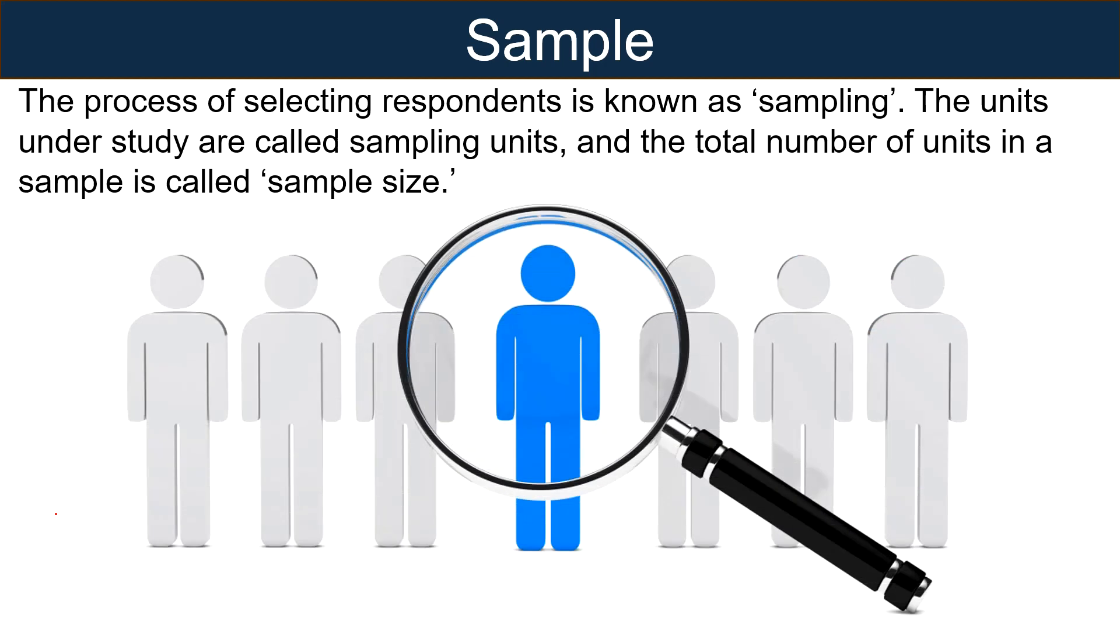The process of selecting respondents is called sampling. The units under study are called sampling units and the total number of units in a sample is called sample size. While conducting statistical testing, samples are mainly used when the sample size is too large to include all the members of the population under study.